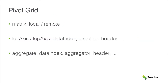Pivot Grid is a tool that allows you to aggregate data per several dimensions. When you want to use a pivot grid in your application, first of all, you need to decide if you want to aggregate your data locally in a client or remotely on a server. If you choose the remote option, you would need to provide a backend service that will aggregate your data.